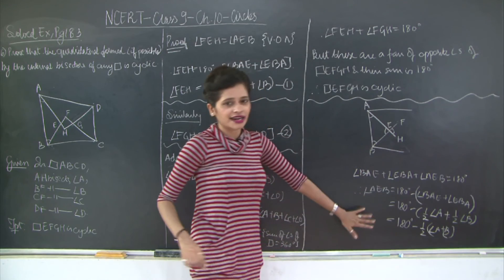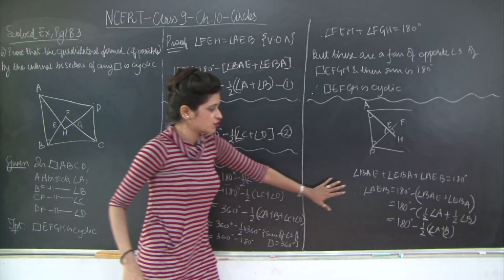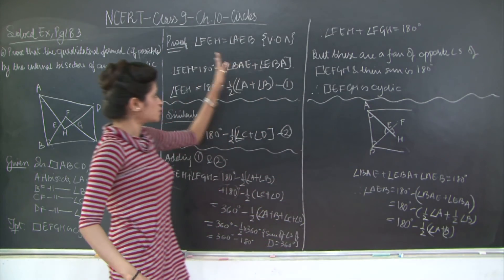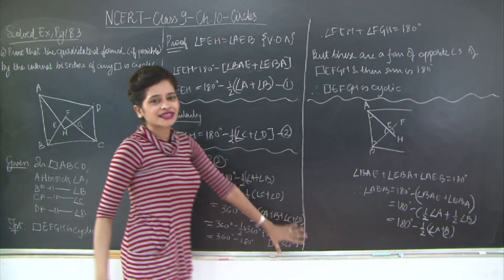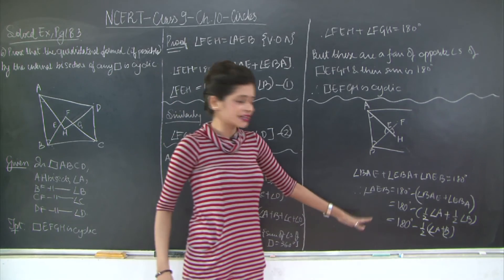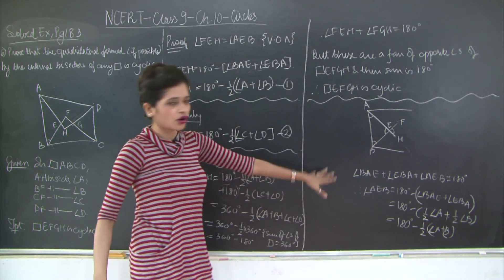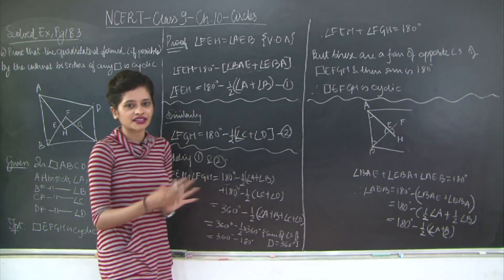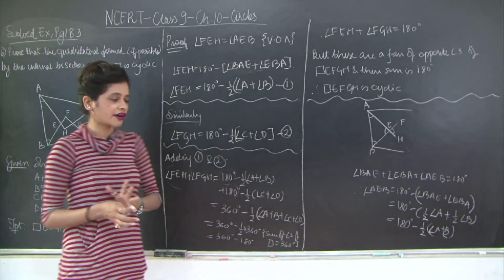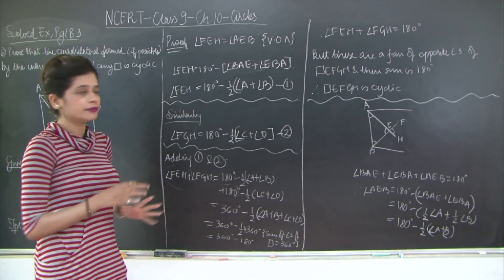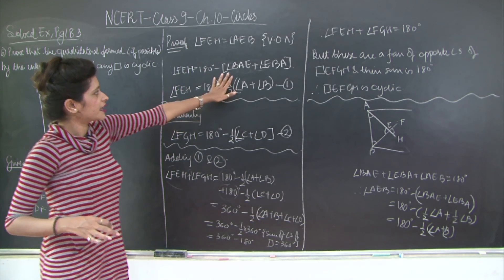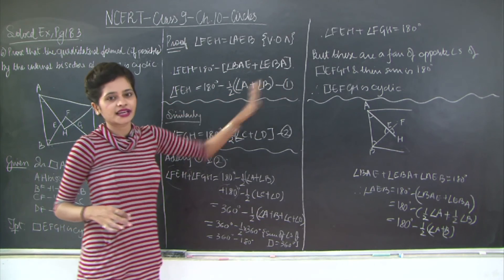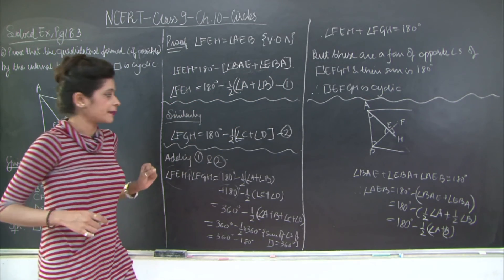Instead of solving it here, you can do it while solving the sum, but it might get a little messy and confusing. So it's better that you solve it on the left-hand side or in a rough column, and make everything precise while writing the final solution.